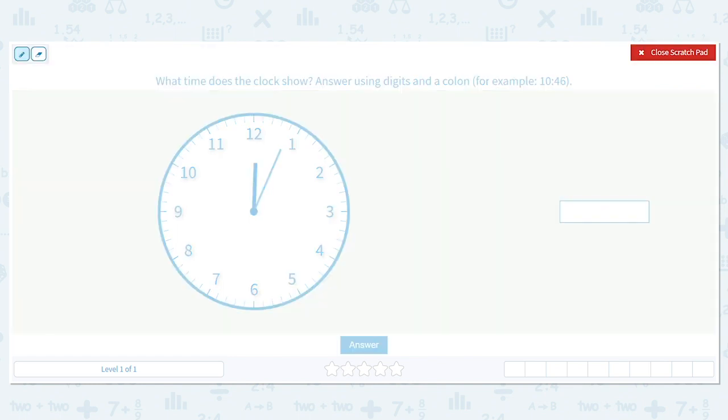The first thing we need to figure out is our hour. Our hour hand is between the 12 and the 1. The rule for the hour, though, is when it's between two hands, you always say it's the earlier hour. So in this case, between the 12 and the 1, 12 is earlier. So 12 is my hour.